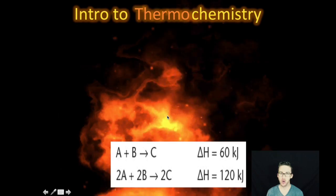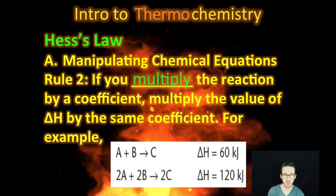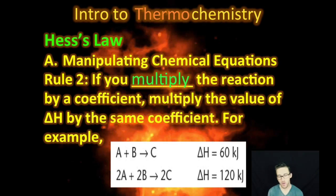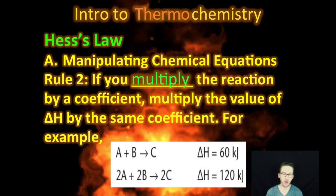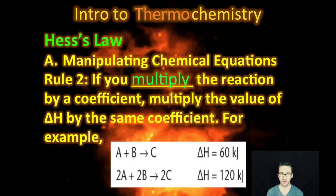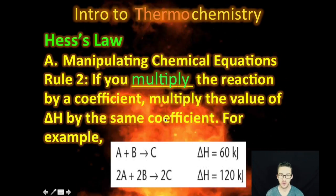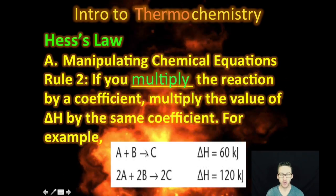Rule numero dos. Sometimes you will need to multiply the reaction by a factor when you're trying to get your overall reaction. And if you do multiply your reaction by a factor, you have to multiply your enthalpy change by the same coefficient or by that same factor.